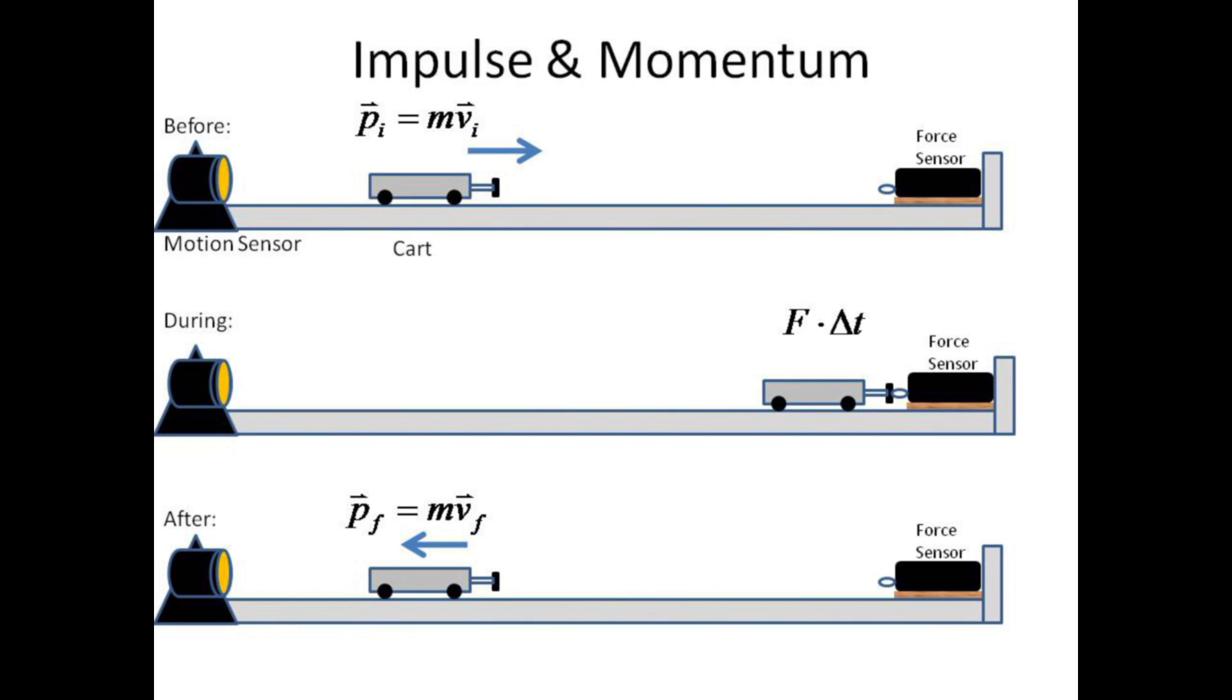In the actual experiment, the massive object is a cart moving from a motion sensor and colliding with a force sensor. The motion sensor gives the initial and final velocities and thus momenta, whereas the force sensor will provide the force versus time curve and thus impulse.